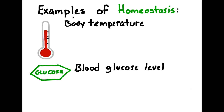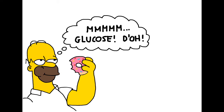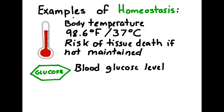Two examples of homeostasis that you are probably familiar with yourself are body temperature and blood glucose level. The human body has an ideal temperature of about 98.6 degrees Fahrenheit or about 37 degrees Celsius. If the human body gets too hot or too cold, the proteins and chemical reactions that are crucial for making our bodies work will not function properly.